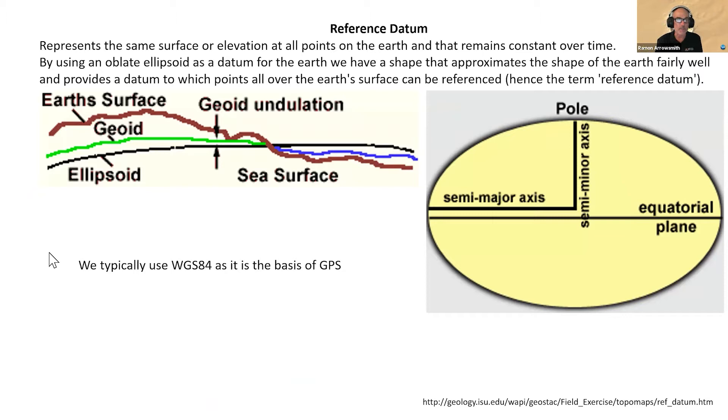What is the reference datum? It's the same surface or elevation at all points on the earth that remains constant over time. The geoid is the surface that has the exact same gravitational acceleration, but depending on the density of the earth and the near surface, the geoid moves around so it's not a sphere, it's kind of like a potato. The earth's topography is similar to the geoid but not exactly, and the geoid is very much close to the sea surface.